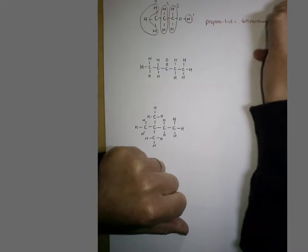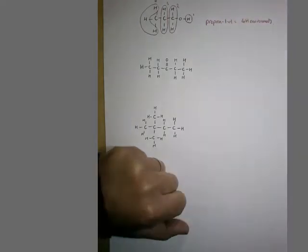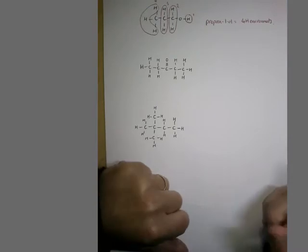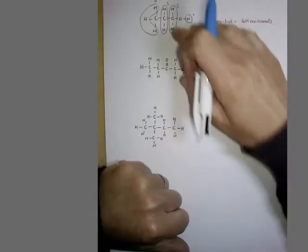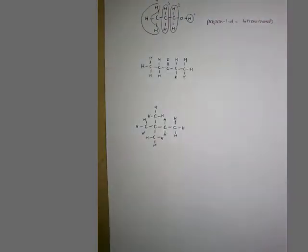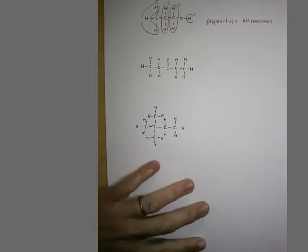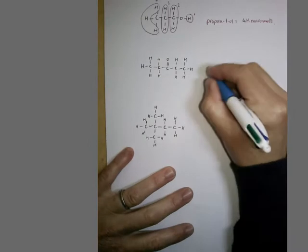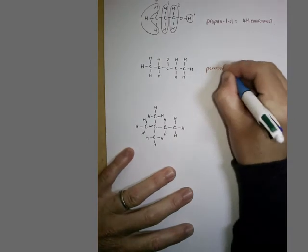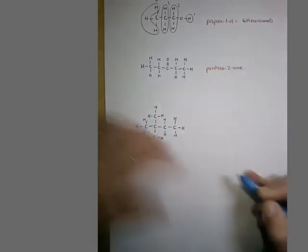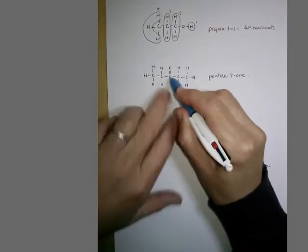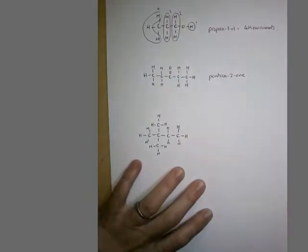I'm going to talk you through a couple of other examples. As well as recognising that every hydrogen attached to the same carbon shares an environment, we also need to consider the symmetry of the molecule. I've drawn a symmetrical molecule here — this is pentan-2-one. In the centre of the molecule we've got a C=O, and to each side we've got a C2H5. It's a symmetrical molecule.